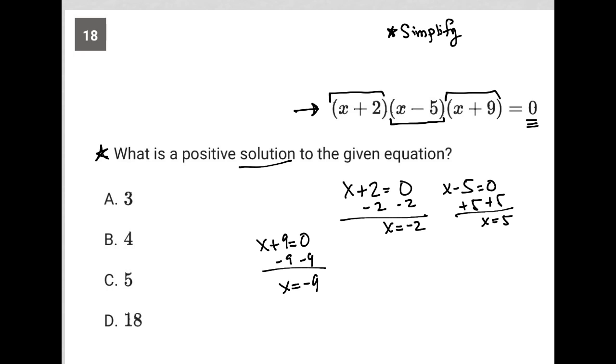The only answer that is a positive solution is five, right? It's the X equals five that came from this binomial. And therefore, our answer is choice C.